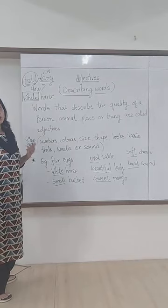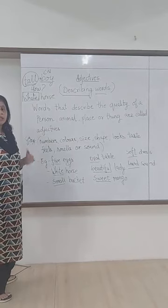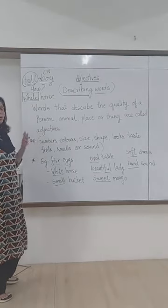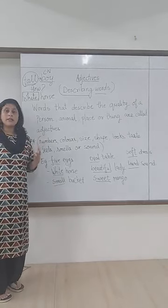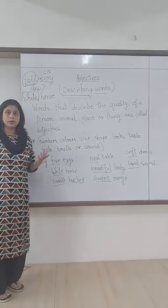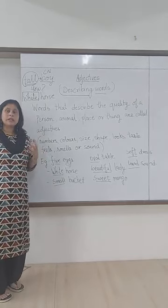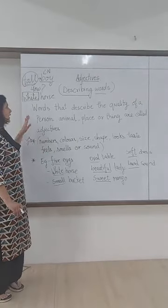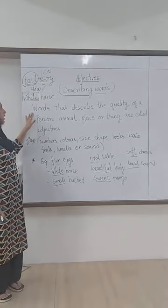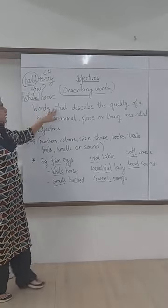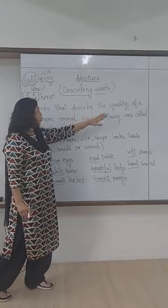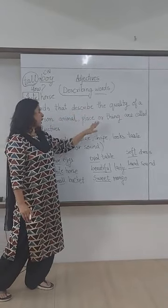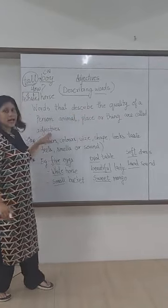If I say 'beautiful' or 'ugly' — how is she? She is beautiful. That is her quality. So 'beautiful' and 'ugly' are adjectives. Let's read the definition one more time: words that describe the quality of a person, animal, place, or thing are called adjectives.